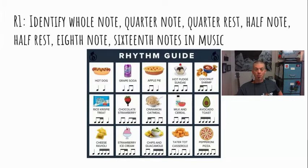So here we go, friends. I have this food rhythm guide here. And what I'm going to do quickly is just read through all of these using the rhythms that are provided. Then we're going to go into individual ones and really talk them out. Follow along with me. Hot dog, grape soda, apple pie, hot fudge sundae, coconut shrimp, rice crispy treat, chocolate, strawberry, cinnamon, oatmeal, milk and cereal, avocado toast, cheese, ravioli, strawberry ice cream, chips and guacamole, tater tot casserole, pepperoni pizza. Fun stuff, huh? Let's keep going.